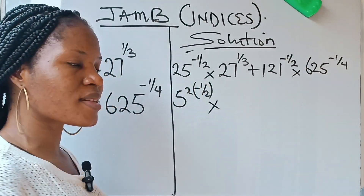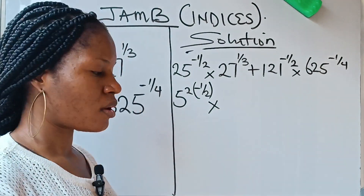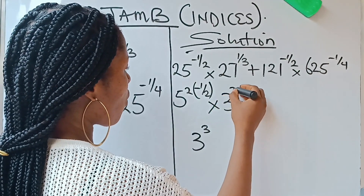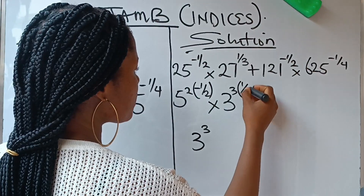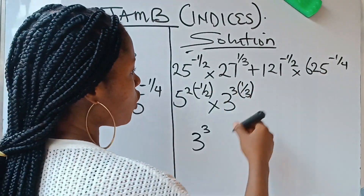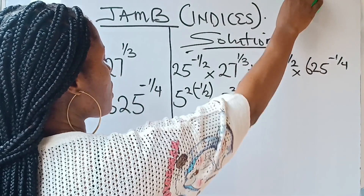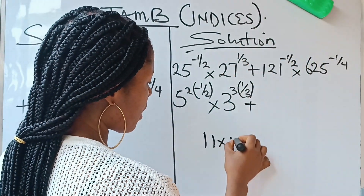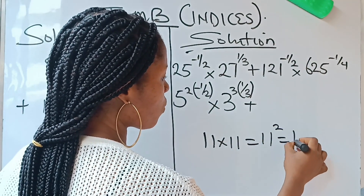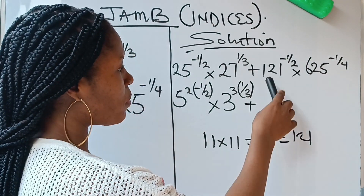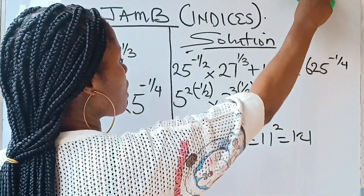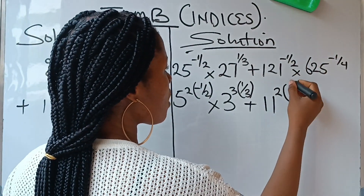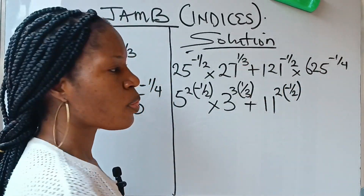Now 27 can be reduced to 3 raised to the power of 3, so I'll write 3 raised to the power of 3, remembering that we have 1 over 3 there already. Plus, 121 is the same thing as 11 squared because 11 times 11, which is 11 squared, gives you 121. So I'm going to replace 121 with 11 squared — 11 raised to the power of 2, everything raised to the power of minus 1 over 2.